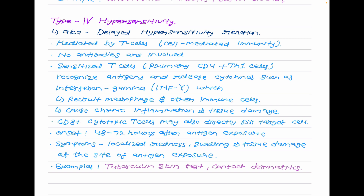The tuberculin skin test is a classic example of type 4 hypersensitivity. A small amount of tuberculin purified protein derivative (PPD) is placed under the top layer of the skin. If a person has been exposed to Mycobacterium tuberculosis, the skin reacts by developing a firm red bump at the site within 2 days. Sensitized CD4+ helper T cell type 1 cells recognize the antigen and release cytokines such as interferon-gamma, which recruit macrophages and other immune cells causing chronic inflammation and tissue damage. CD8+ cytotoxic T cells may also directly kill target cells.